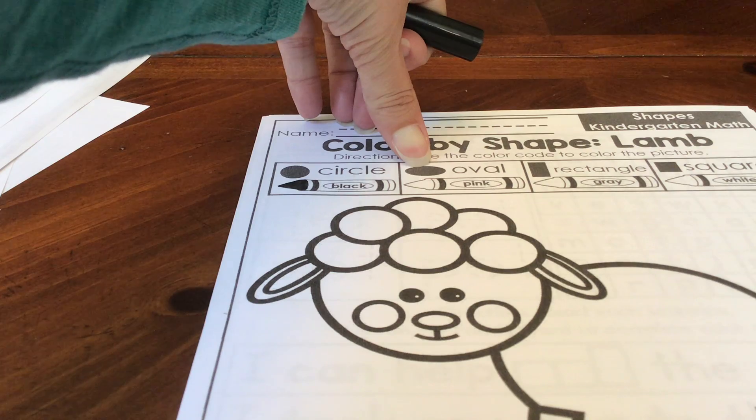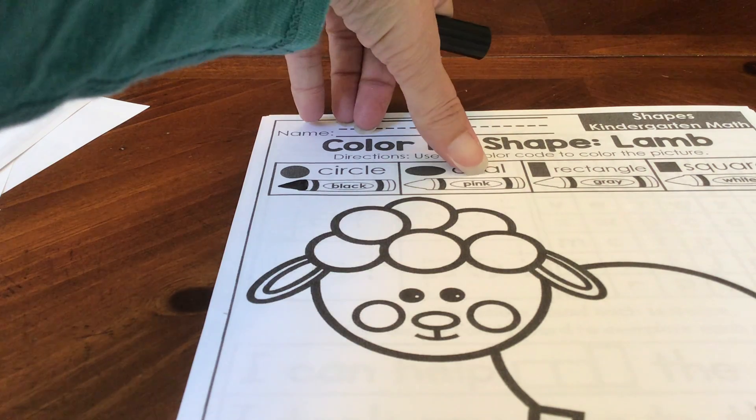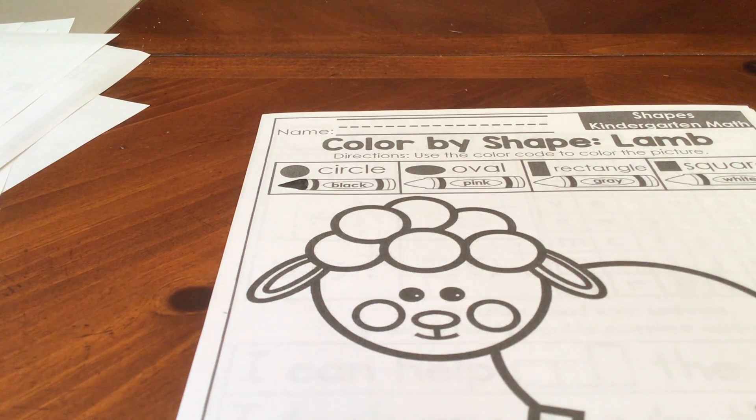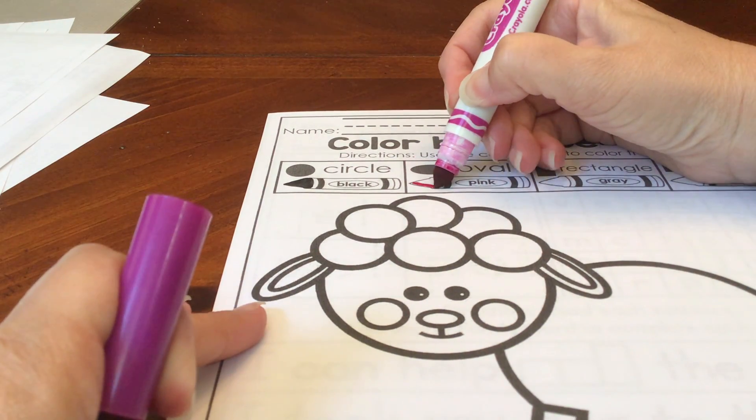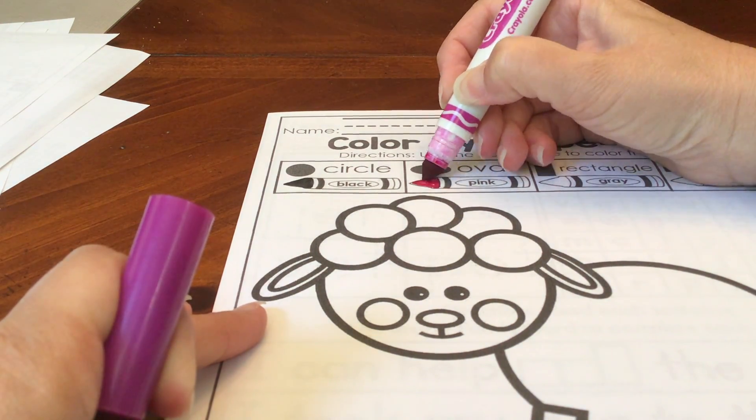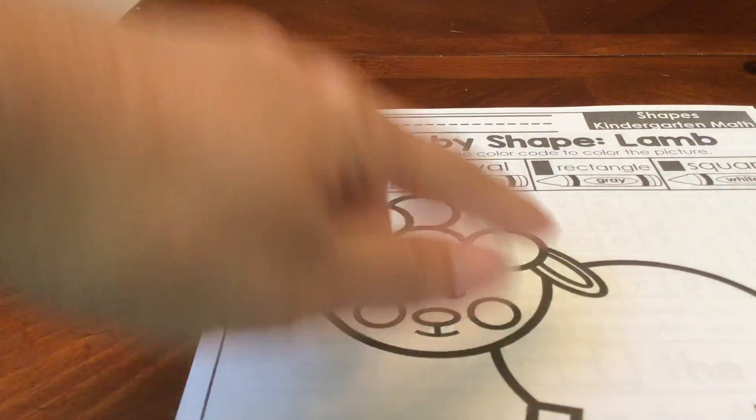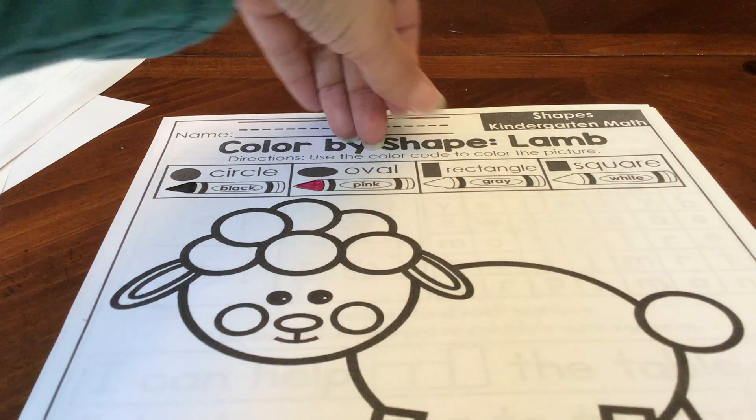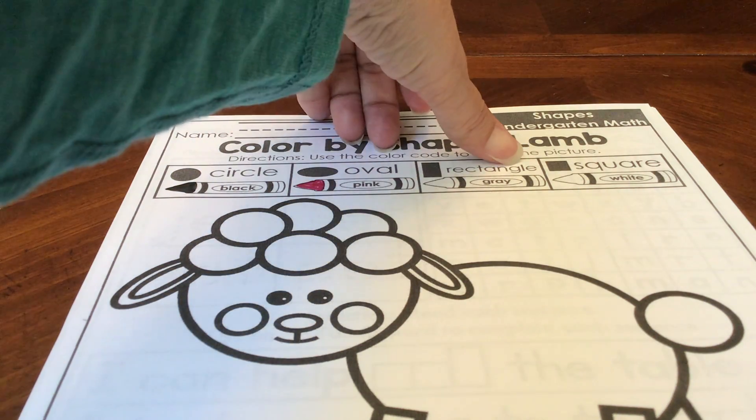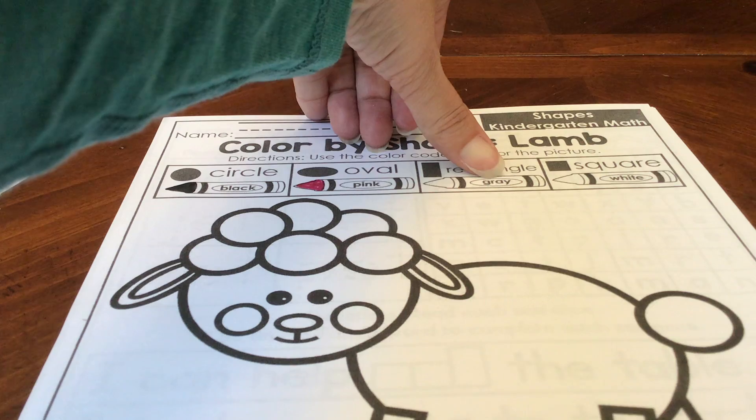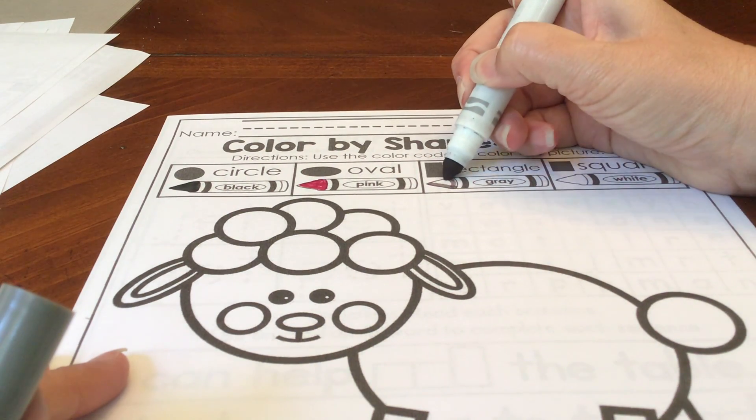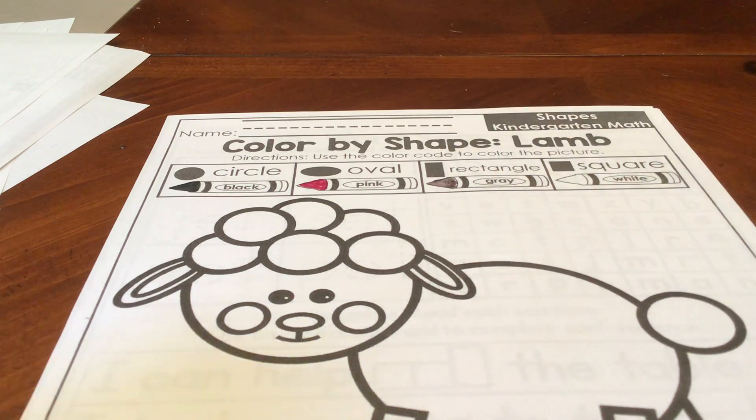What shape is this? An oval. And it says we're going to color it pink. My pink's a little purpley looking, but it's okay. That's our next shape. It has one, two long sides and one, two short sides. Rectangle. And it says to color it gray. If you don't have one of these colors, it's fine. Just pick another color to use instead.